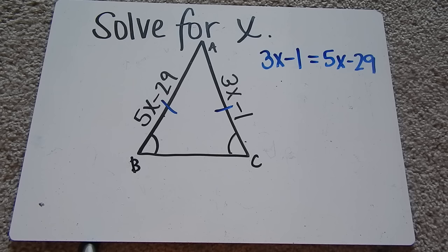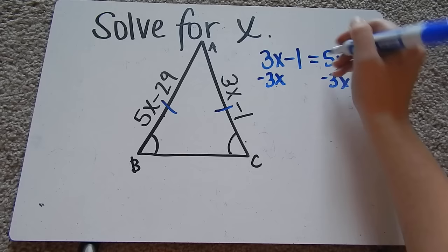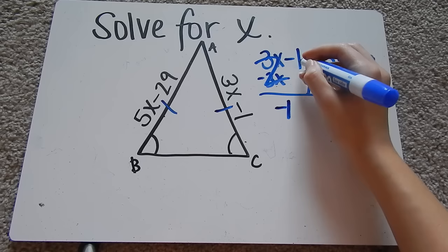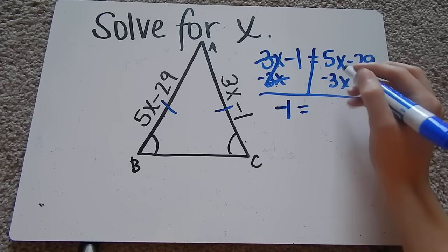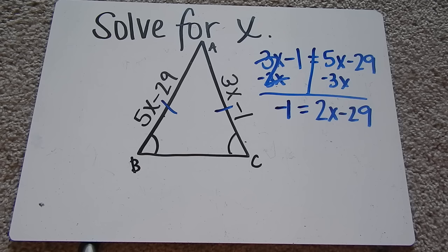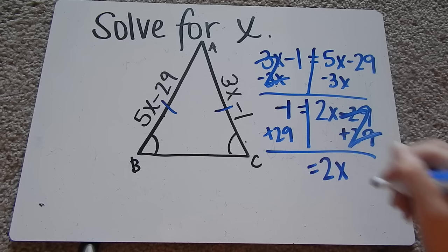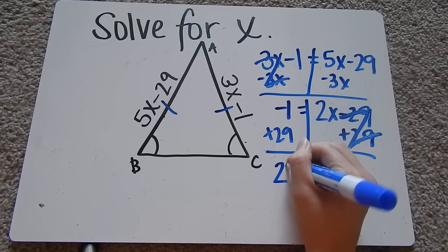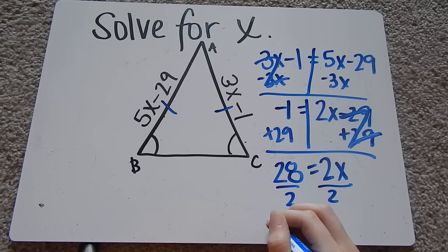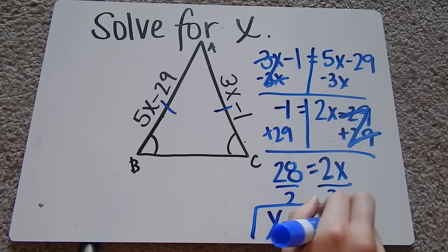Okay, then I'm going to move all the x's to one side. I'll subtract 3x from both sides to move it over. The 3x's will zero out. Bring down negative 1. Bring down your equal sign. 5x minus 3x is 2x. Bring down this minus 29. Then I'm going to add 29 to the other side. That will zero it out on the right-hand side. I'm left with 2x on that side. Negative 1 plus 29 is 28. And divide both sides by 2. And we'll get our answer, x equals 14.